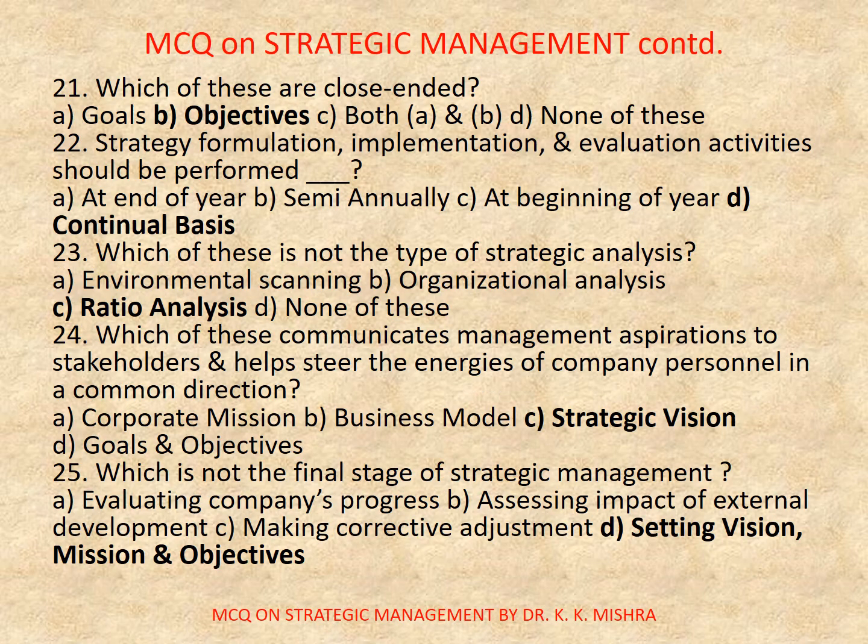Question 21: Which of these are closed-ended? A, goal; B, objectives; C, both A and B; D, none of these. Correct option is B: objectives.